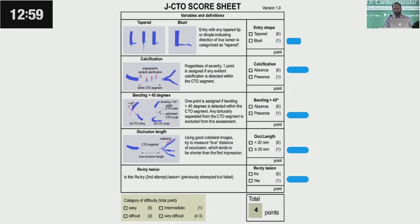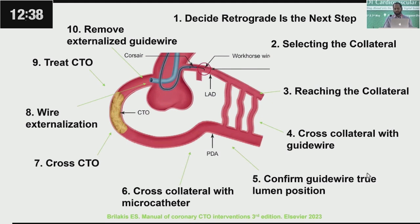When you look at the JCTO score, this has a score of four. This is a patient who had been attempted earlier, so there's a blunt cap, an absence of calcification, but a bend and an occlusion length more than 20mm with a re-entry lesion at the distal crux of the right coronary artery, giving a JCTO score of four. We decided to go retrograde because an anterograde approach had been tried earlier. The usual protocol in our hospital is to re-attempt anterograde if it's been done at the center, then go retrograde if the anterograde approach fails. But this was done by a colleague quite good at anterograde, and since he had failed, I decided to go retrograde as a front-off.